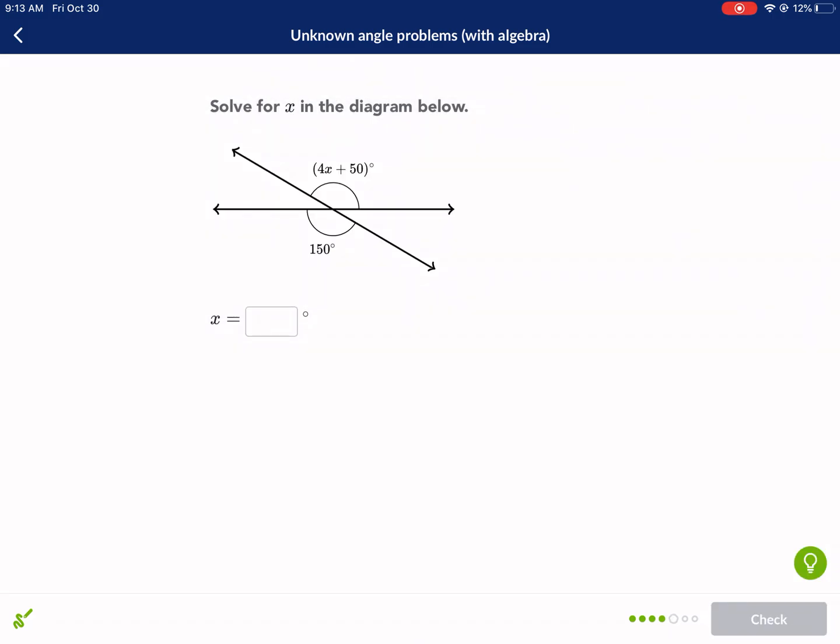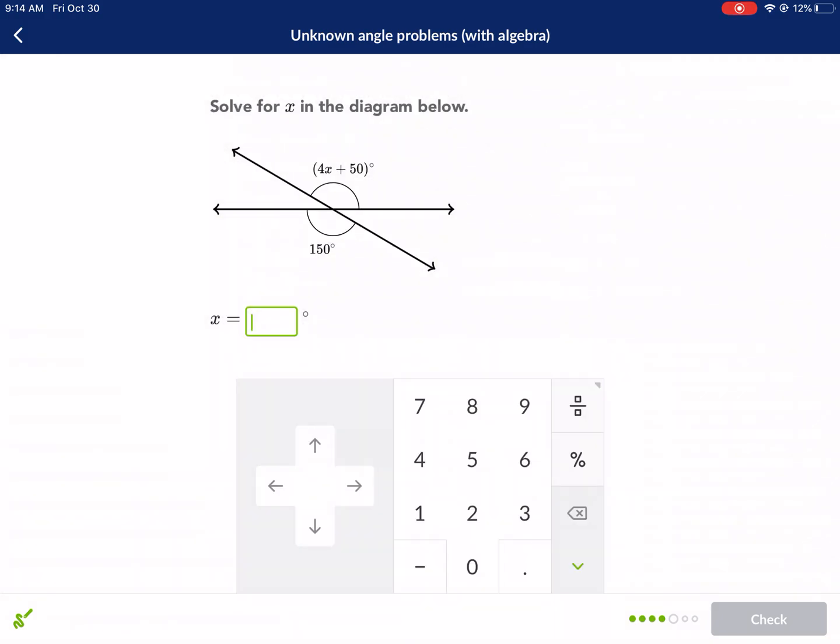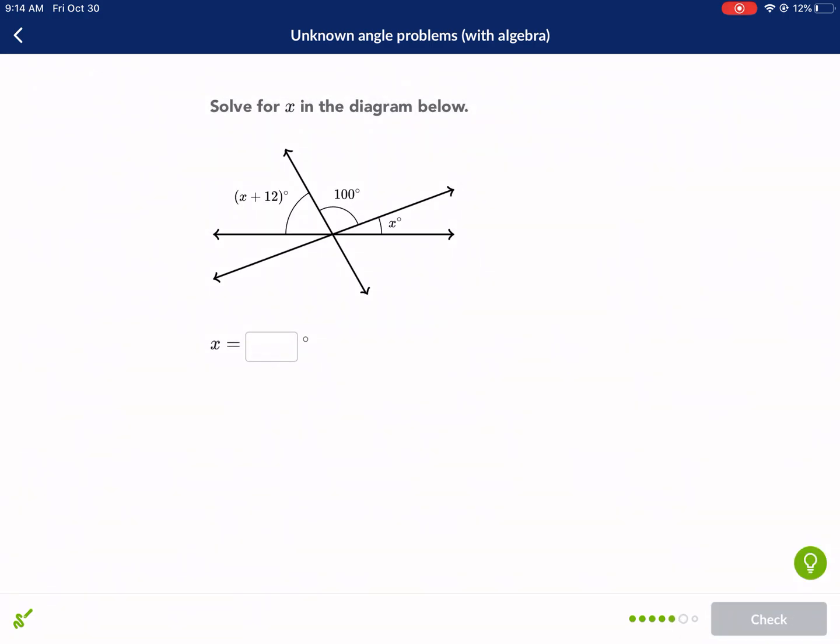So then we have vertical angles here. We're going to set them equal to each other. Purple is equal to purple. We get 4X plus 50 equals 150 minus 50. I get 100 equals 4X. What times 4 equals 100? And that is 25. So we have 25. We have a couple more. I think I'm going to get it under 5. Really pushing it.